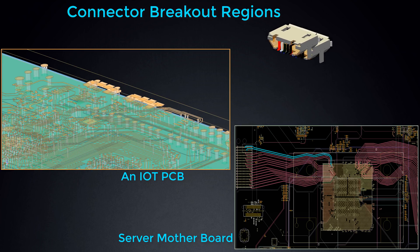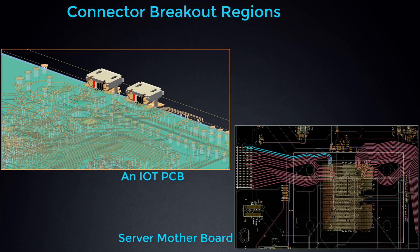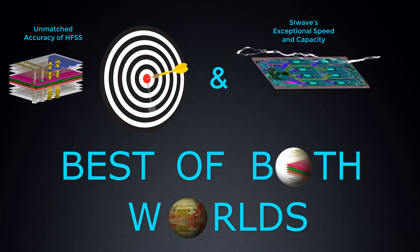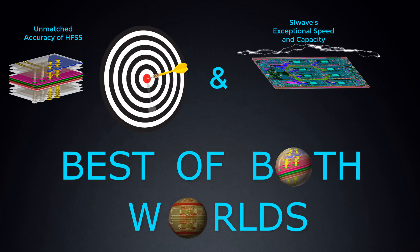For sections of a signal line requiring precise 3D analysis, such as this connector land pattern, HFSS Regions gives you the unmatched accuracy of HFSS with SI-Wave's exceptional speed and capacity, so you get the best of both worlds.